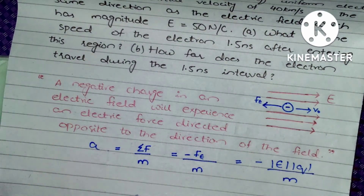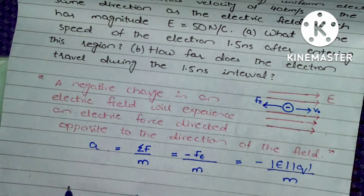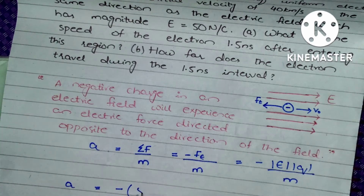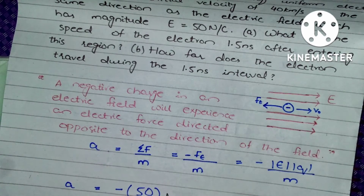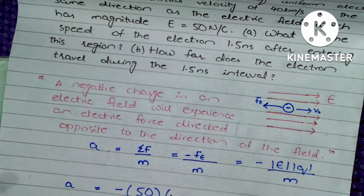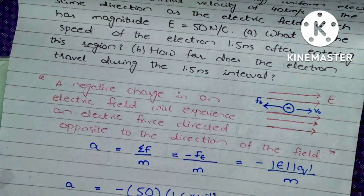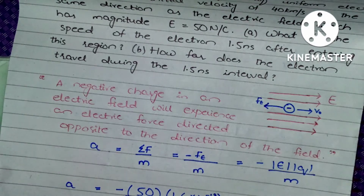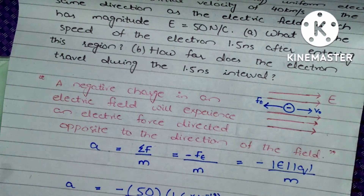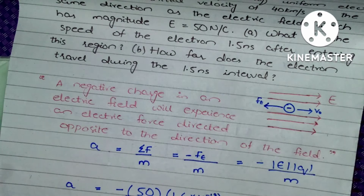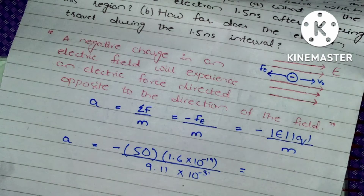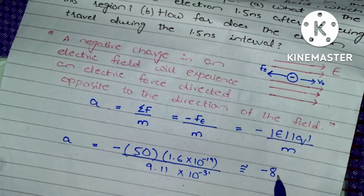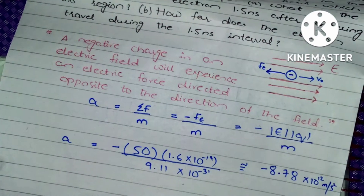Now we have all the values given to us in the question — we just need to substitute them to get the acceleration. The magnitude of the electric field E is 50 N/C. The charge of an electron is 1.6 × 10⁻¹⁹ C, and the mass of the electron is 9.11 × 10⁻³¹ kg. When you substitute all these values, you get approximately a = −8.78 × 10¹² m/s².